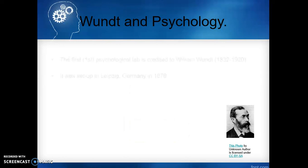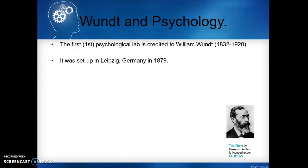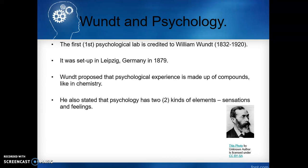Wundt and psychology: the first psychological lab is credited to William Wundt, and it was set up in Leipzig, Germany in 1879. Wundt proposed that psychological experience is made up of compounds — similar to chemistry, where different elements combine to make something. Just as salt is made up of different elements, our psychology, our behavior, our thinking, and our feelings are made up of different compounds.